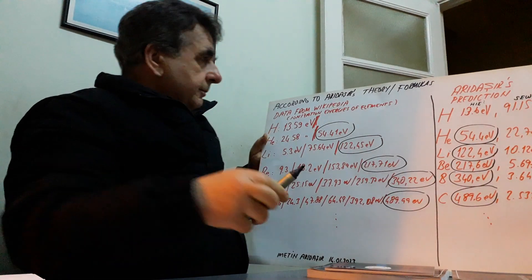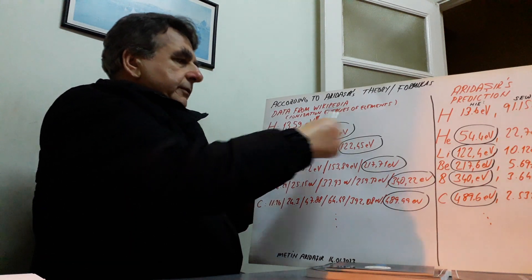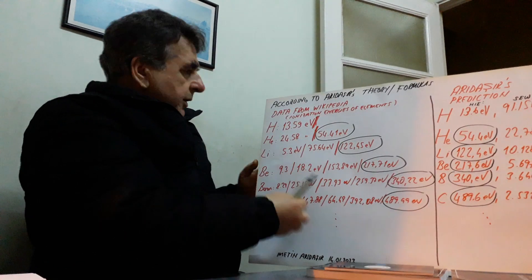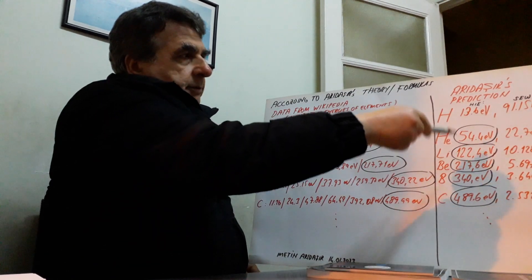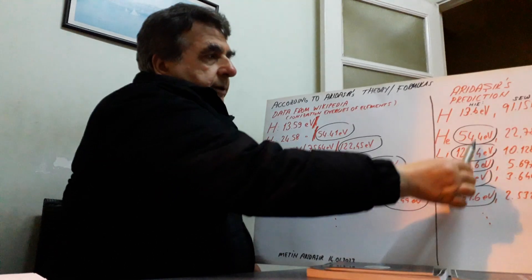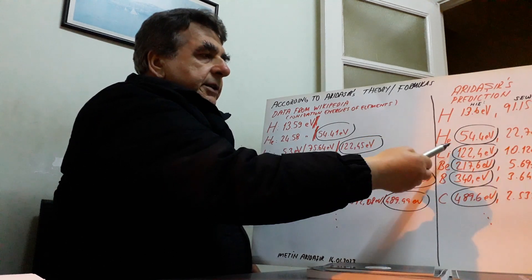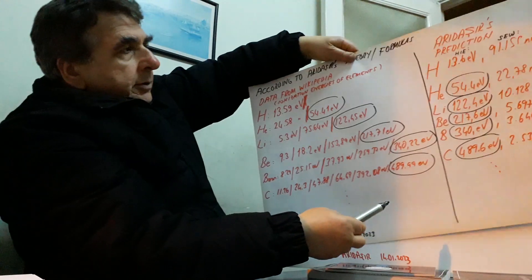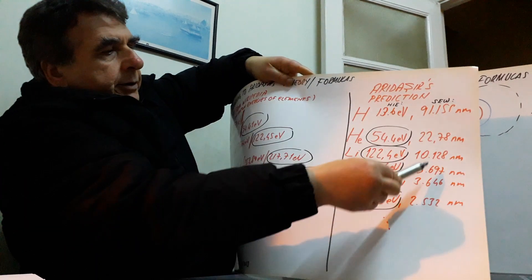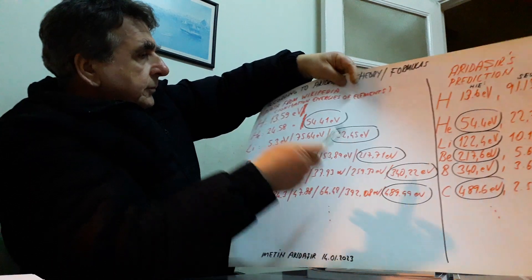I hope you can see. Left side: data from Wikipedia — ionization energies of elements — hydrogen, helium, lithium, beryllium, boron, carbon. Right side: my prediction, according to my energy formulas. The highest ionization energy and smallest electron wavelength for hydrogen, helium, lithium, beryllium. Look at that — according to my energy formulas.